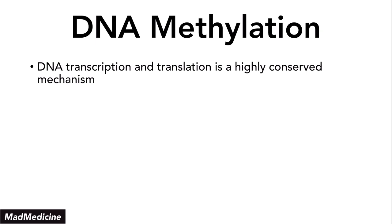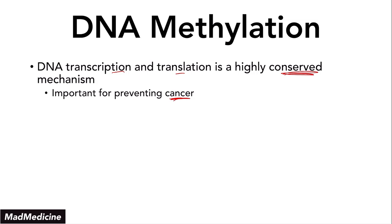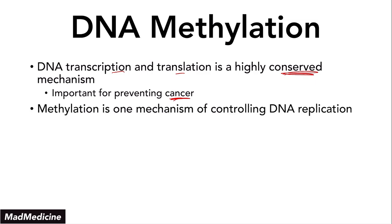Why is it very conserved? Because we cannot accept any errors — it has to be very consistent and there cannot be deviations in this process. If there are deviations, they will lead to cancer. Therefore, DNA transcription and translation is highly conserved. Methylation is one of the mechanisms our body uses to keep these processes conserved and to control DNA replication, ensuring the replication and translation process is consistent and not altered.